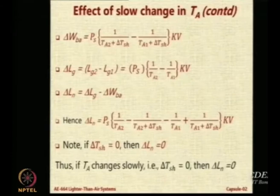TA will be 288, PS will be 101325, K you already must have calculated 0.03416, V is 6000. Always ensure the units are correct.